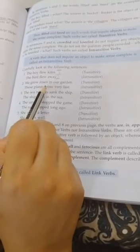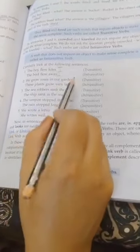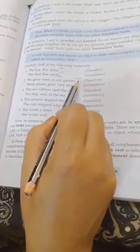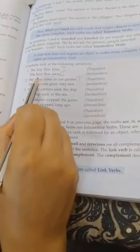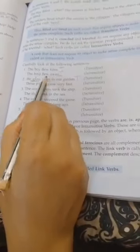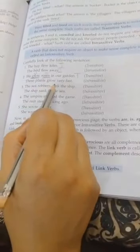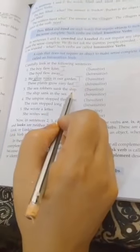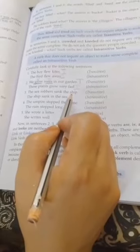See the examples: 'The boy flew kites'—transitive verb. 'The birds flew away'—intransitive verb. 'We grow roses in our garden'—transitive verb. 'These plants grow very fast'—intransitive verb.